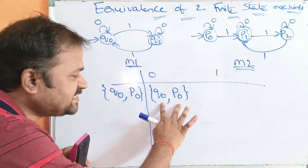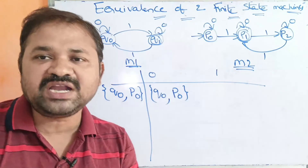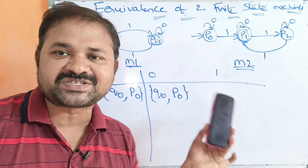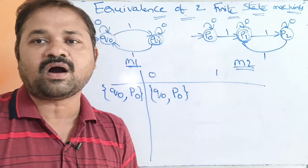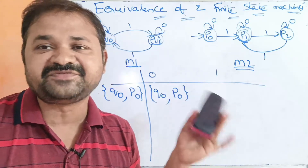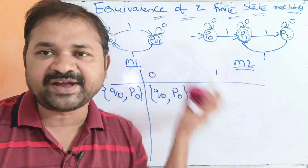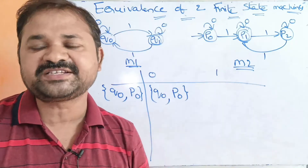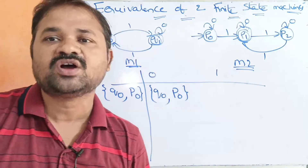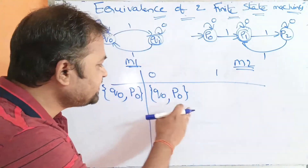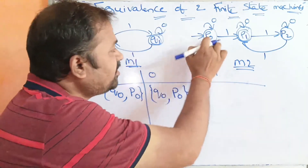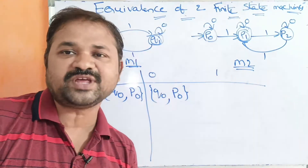We have to check whether this pair contains only final states or only intermediate states. If the pair contains only final states or only intermediate states, then there is no problem. But if the pair contains one final state and one intermediate state, then we can say the two finite state machines are not equivalent. Here Q0 is an intermediate state and P0 is also an intermediate state, so there is no problem.